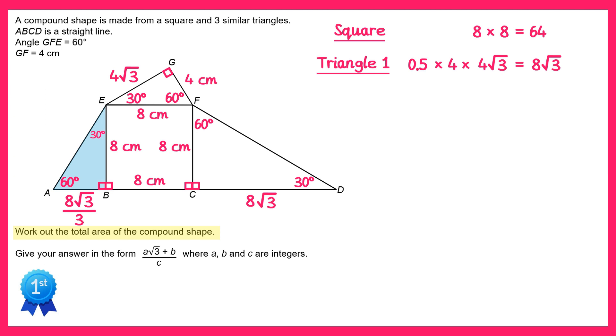Now for this triangle here, once again we do one half times the base, which is 8, times the perpendicular height, which is 8 root 3 over 3, and this gives you 32 root 3 over 3.